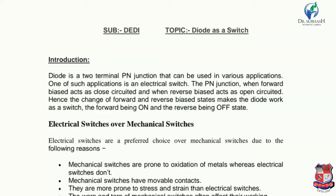A diode is a two-terminal PN junction that can be used in various applications. A PN junction diode consists of a P-type semiconductor joined with an N-type semiconductor. The PN junction is a two-terminal device.